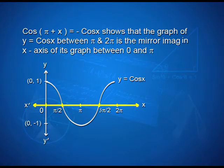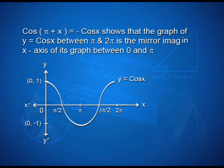Looking at the graph, we have x-axis x'Ox and y-axis yOy'. We can observe that the point (0, 1) is the starting point and since it is a decreasing function, it comes down to pi/2 and completes its graph till pi. The portion from pi to 2 pi is the mirror image of the previous graph. This is how y = cos x is plotted.